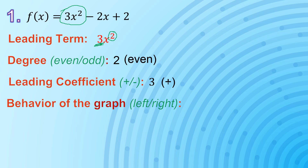That number 3 is positive. So what we have now is an even degree accompanied by a positive leading coefficient. Therefore, how will the end behavior of the graph of our polynomial function be? It will rise on the left side and also rise on the right side, because with an even degree, the left side behavior and the right side behavior are the same. So this is the possible end behavior of our graph for this given polynomial function.